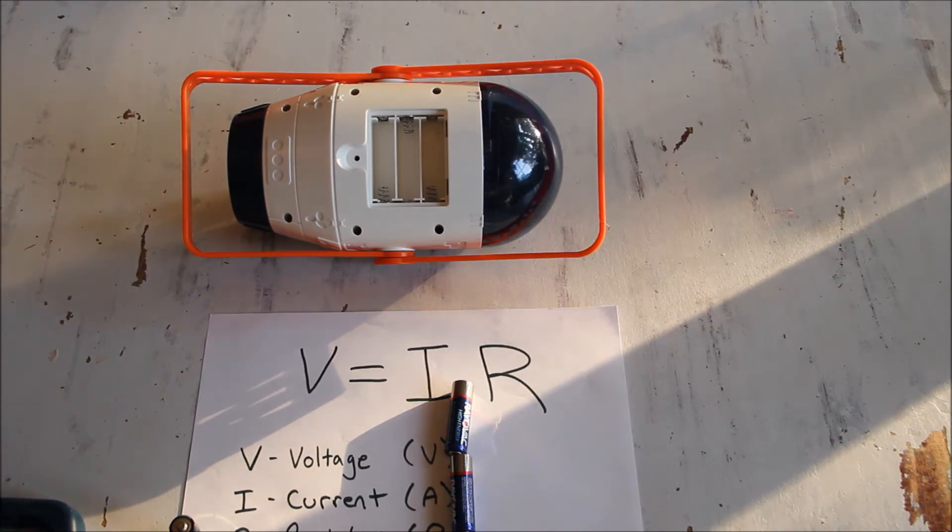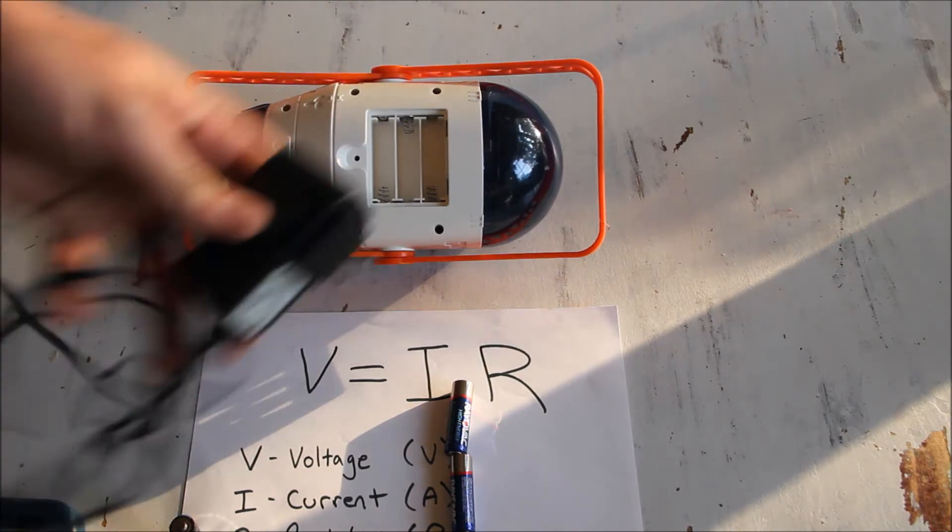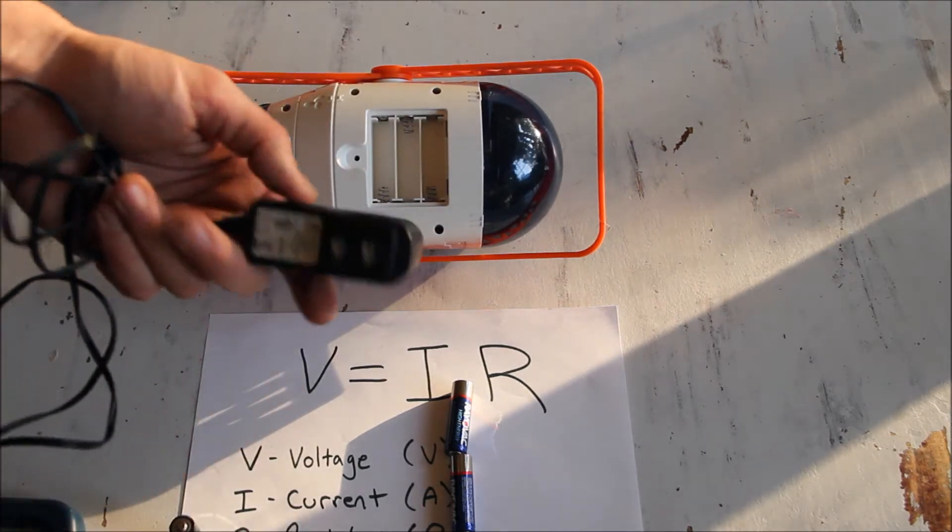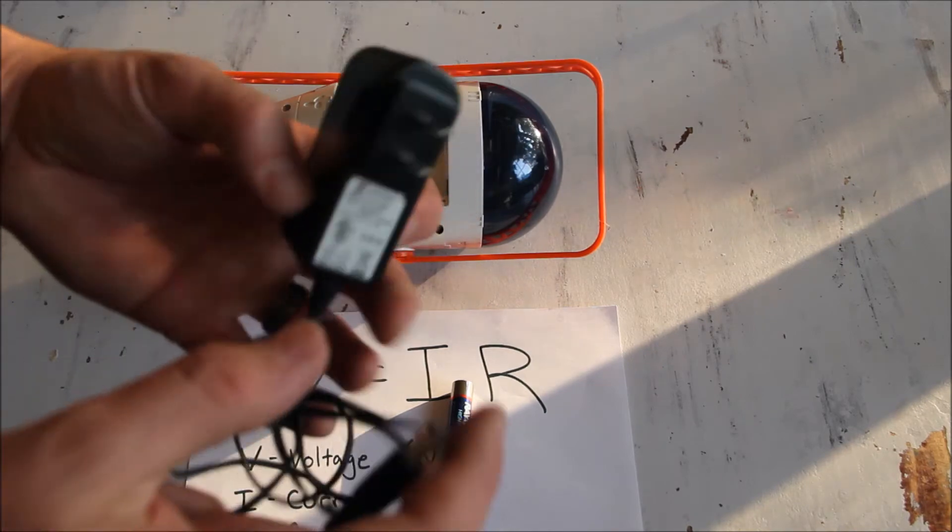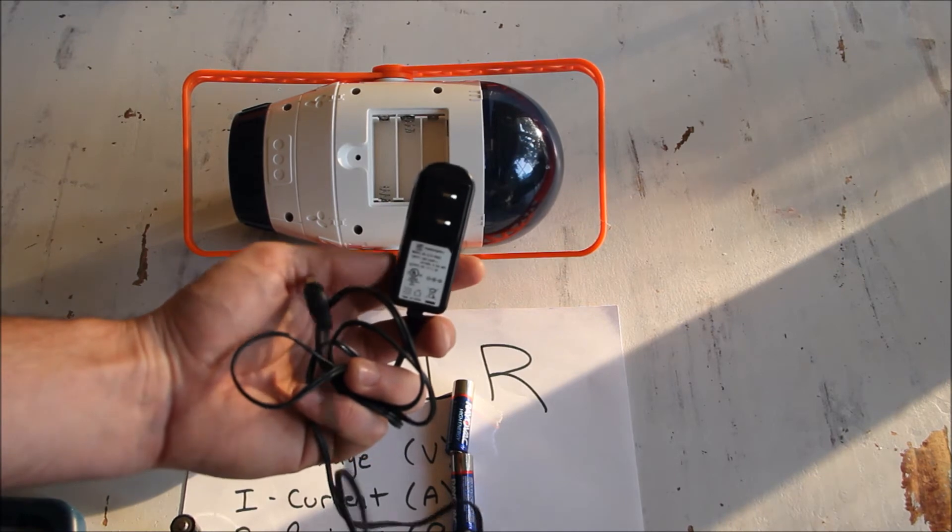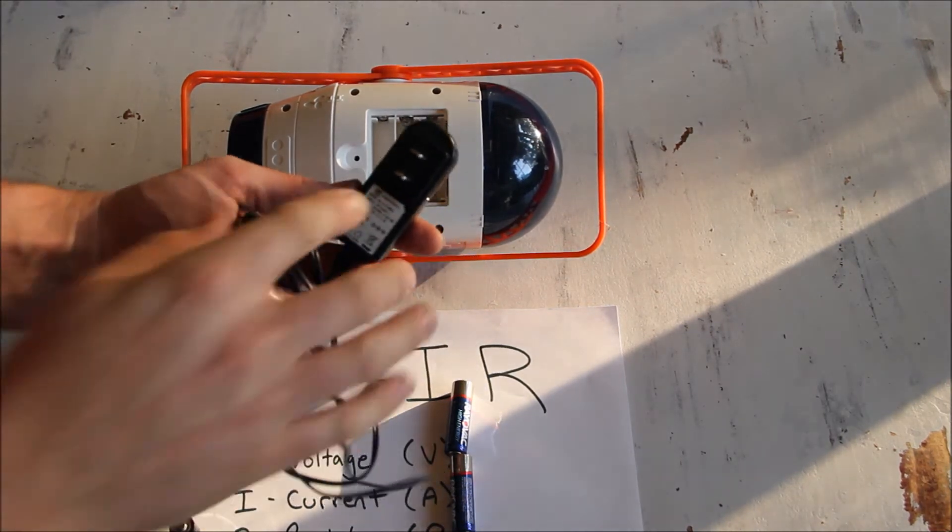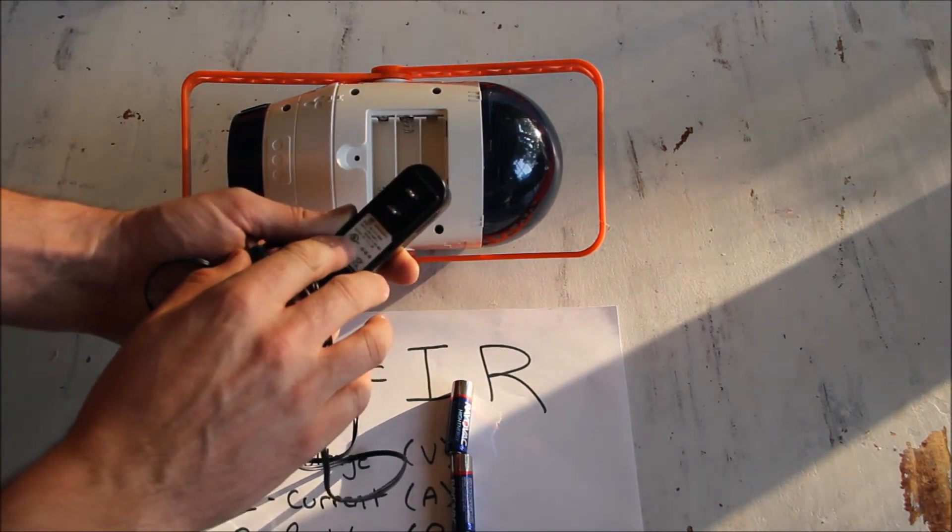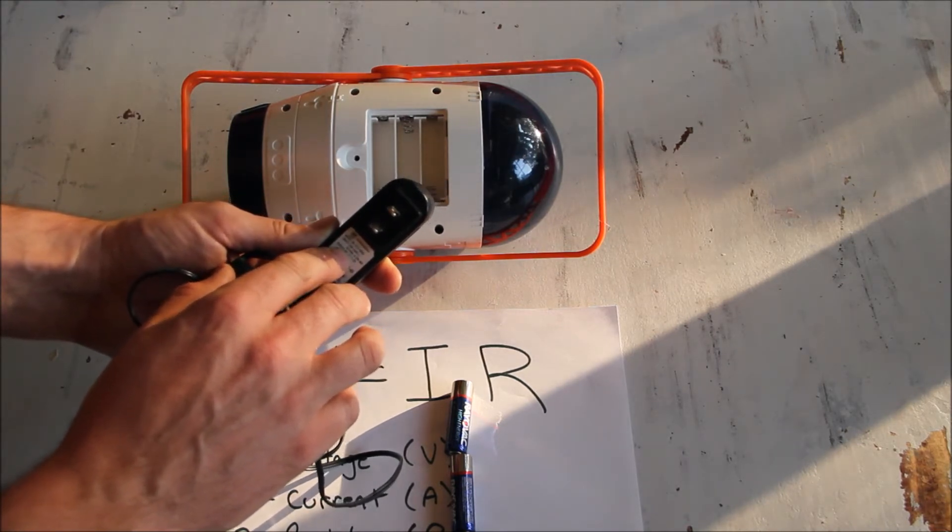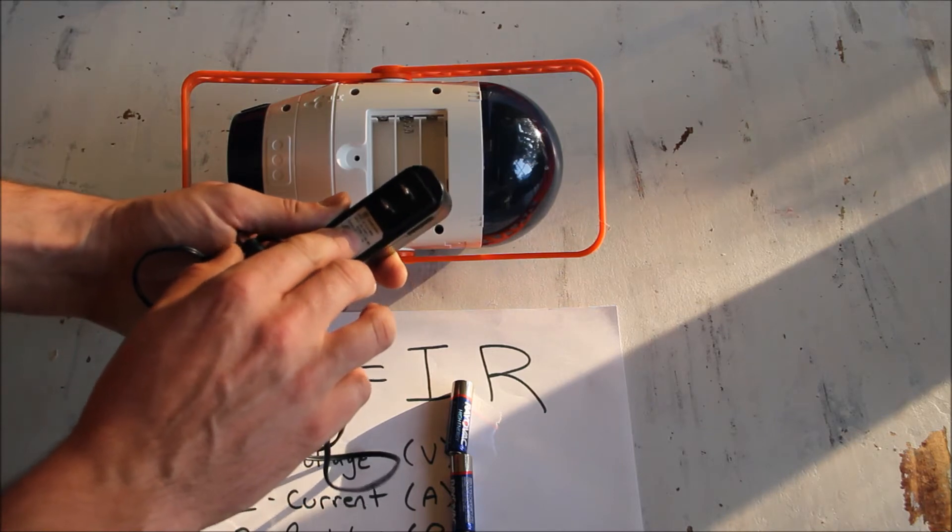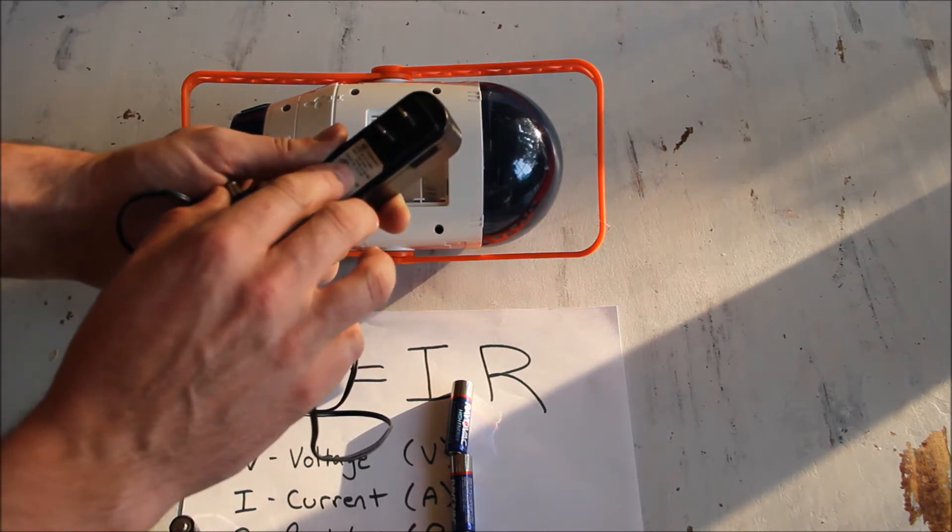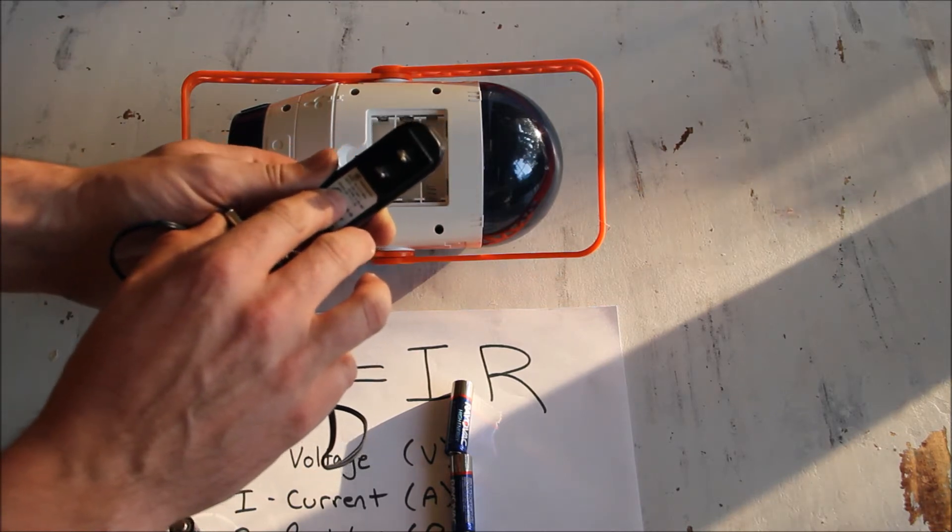I've got this old charger for something, I'm not sure what. Up here it tells me that the input is somewhere between 100 and 240 volts AC and the output is going to be 5 volts and a max output of 1.2 amps.